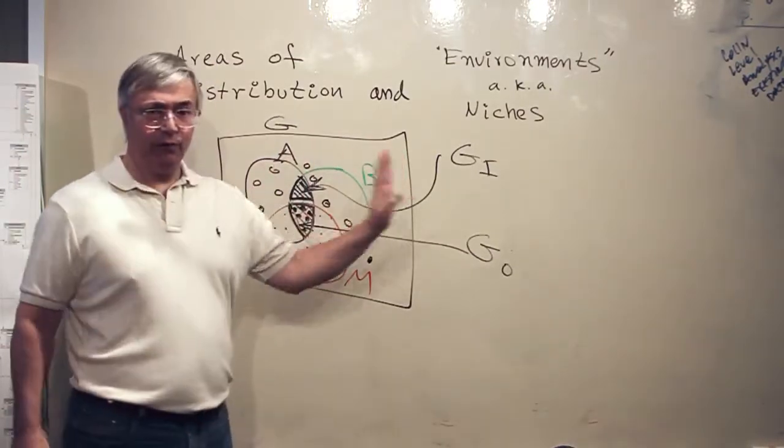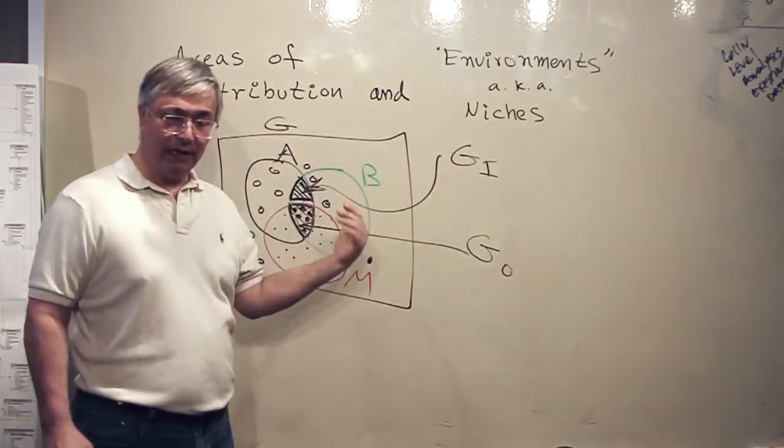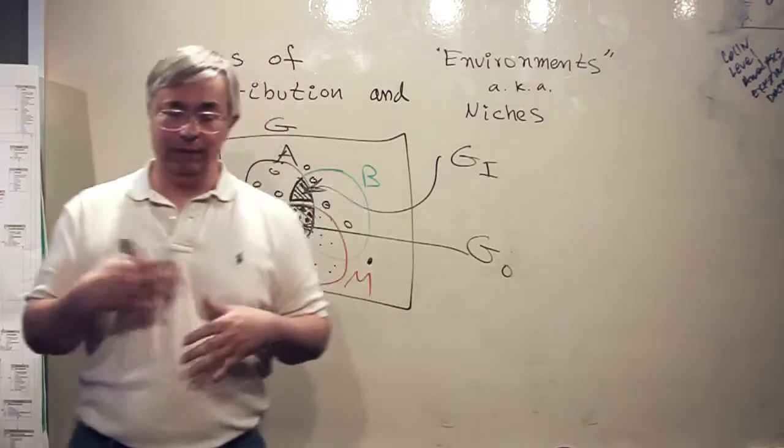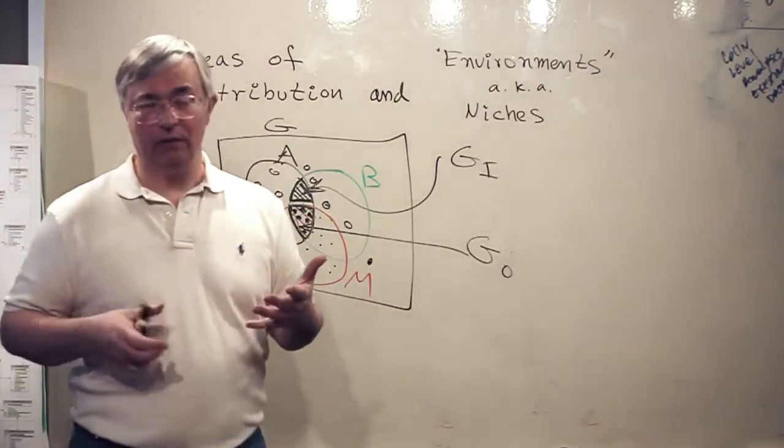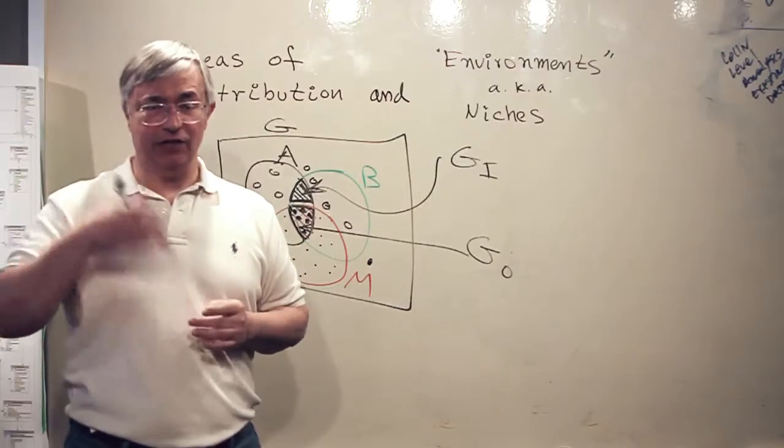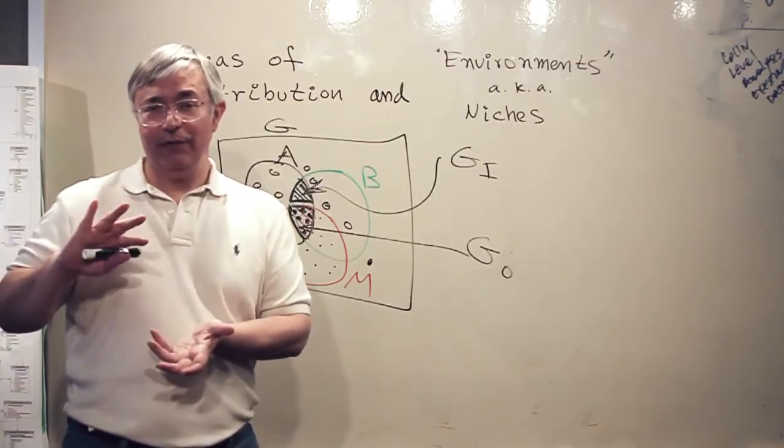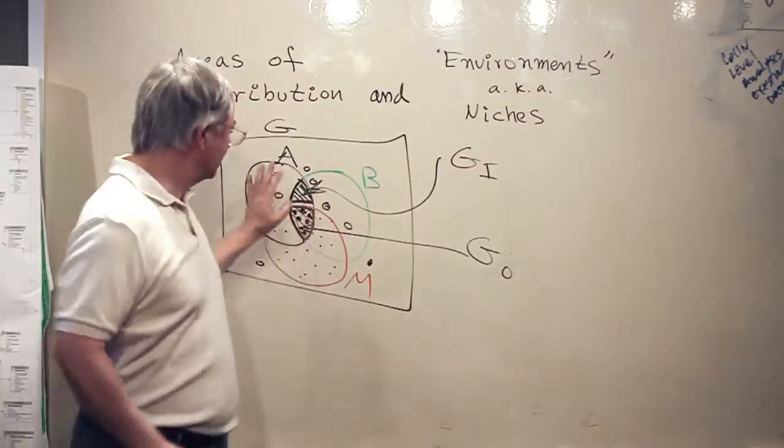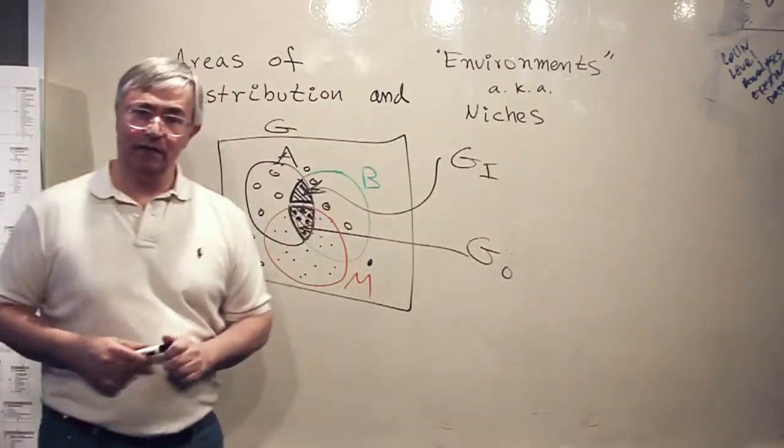We need to refer now to the environmental part of this. A most essential part of the entire field of species distribution modeling slash niche modeling is that you refer all the time, back and forth, between geographical space and environmental space.